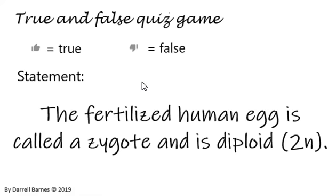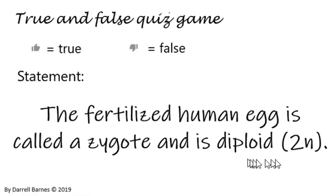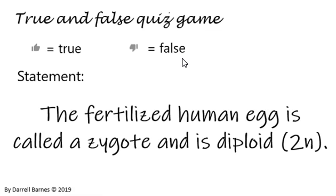True or false: the fertilized human egg is called a zygote and is diploid 2N, meaning that it contains two complete sets of chromosomes. Is this true or false? Thumbs up for true, thumbs down for false. Let me know in the comments what you think.